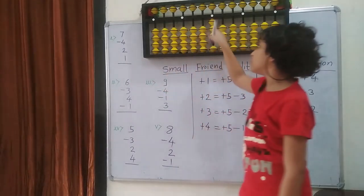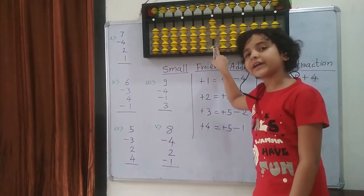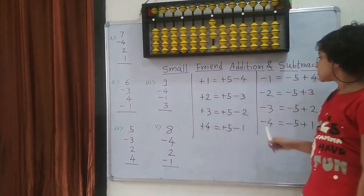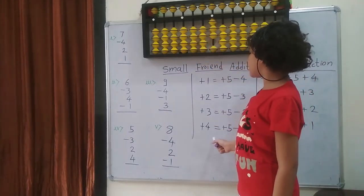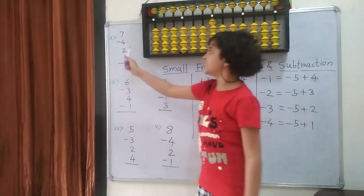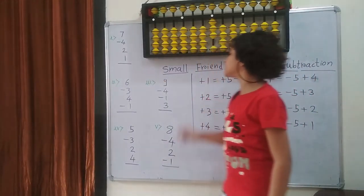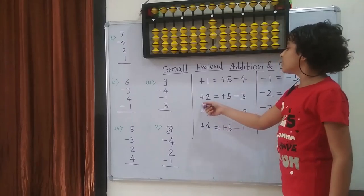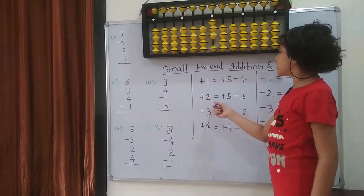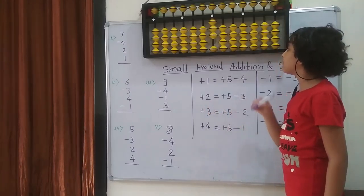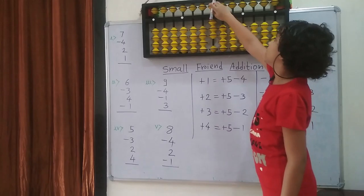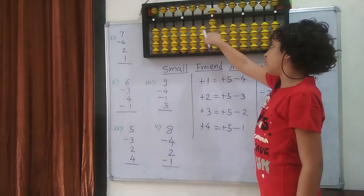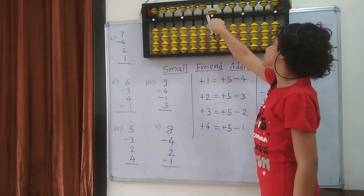Then I have to add 2. So I again cannot, because I don't have any bits. So I am going to use the formula — this is addition, so I am going to use the addition formula. Which is: plus 2 equals to plus the 5 minus the 3. So plus the 5 and minus the 3. So 1, 2, 3.